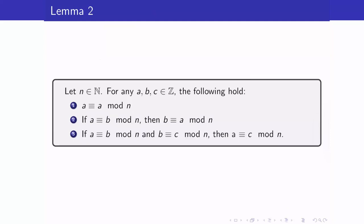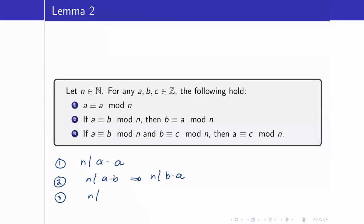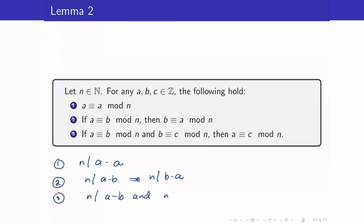We also have this result regarding modulo n. Number one: a is congruent to itself modulo n. A quick proof outline — n divides a minus a, and that is correct because n divides zero. Number two: if n divides a minus b, then n divides b minus a. That is true because a minus b and b minus a are just negatives of each other. Number three: if n divides a minus b and n divides b minus c, then n divides a minus c. For all of this, I am just using the definition of modulo n.